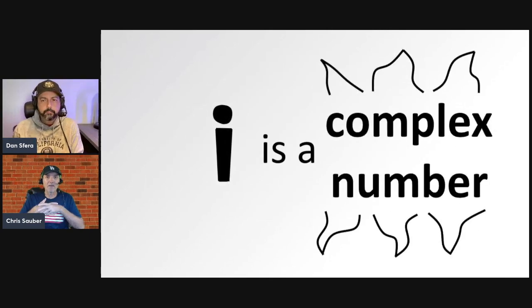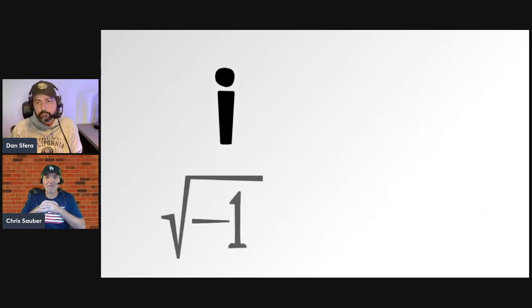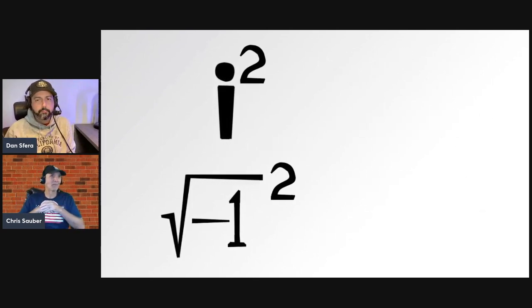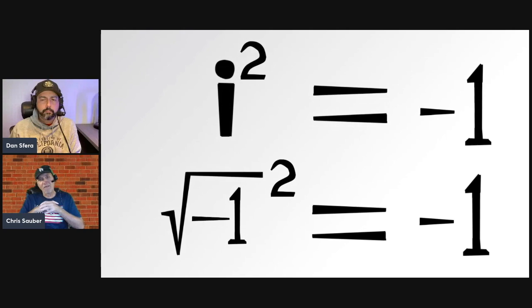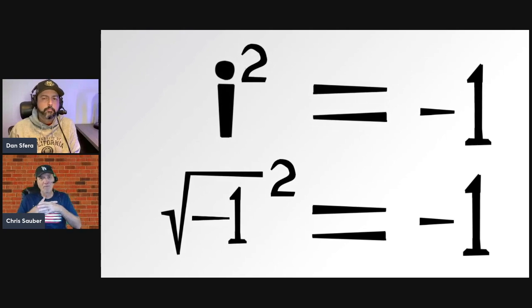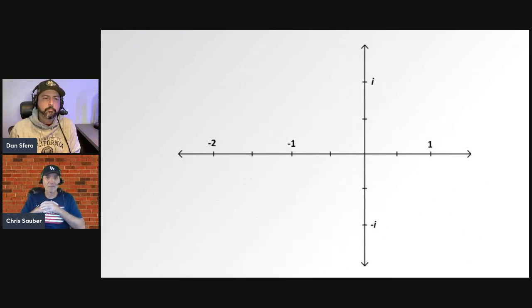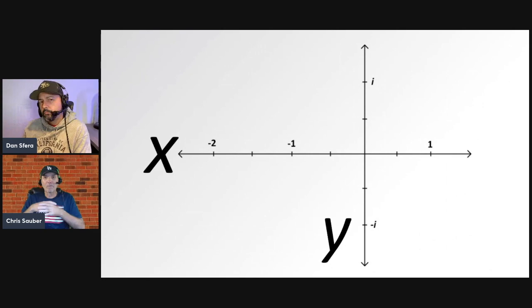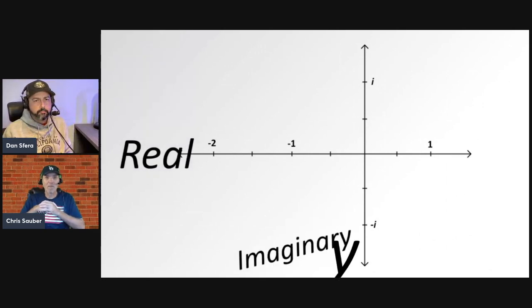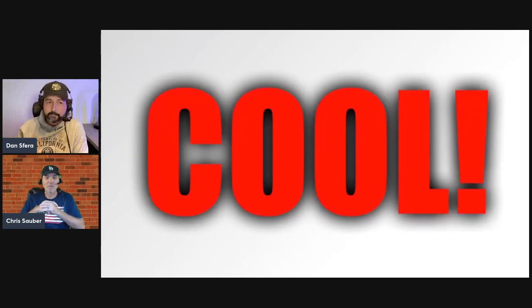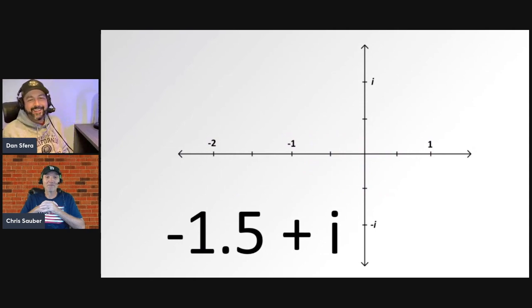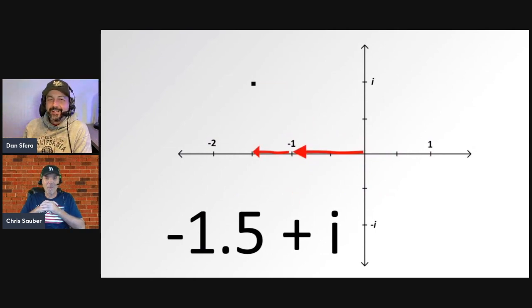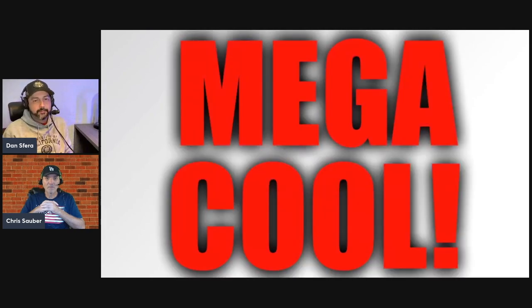Any number involving i is known as a complex number — looks like I'm in calculus again. The neat thing about i is that when you square it, it equals negative one. This can make some interesting things in mathematics possible. This is the complex plane: instead of an x and y axis, we have a real and imaginary axis. For example, this complex number would be here on the plane — one and a half units left and one unit up.